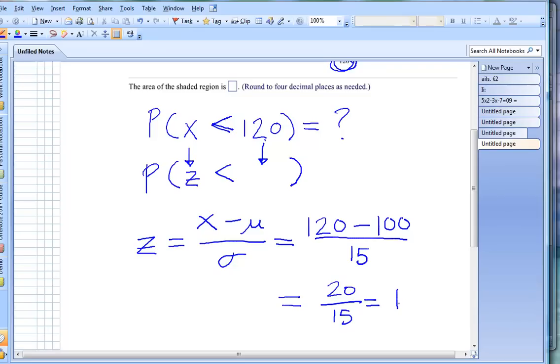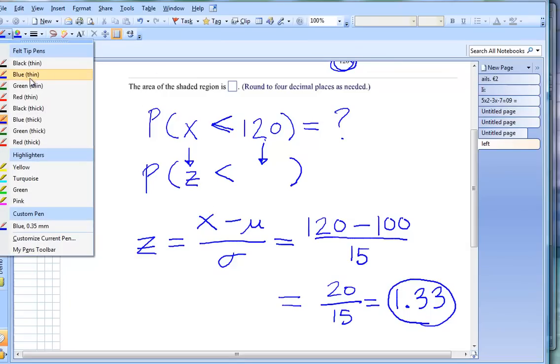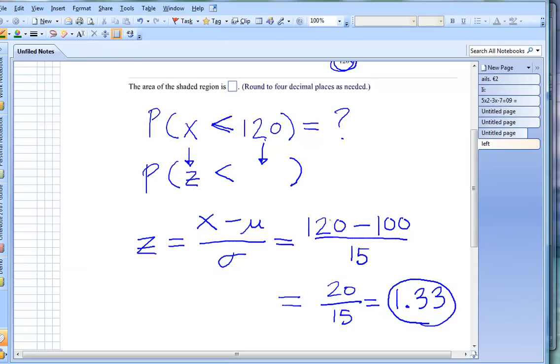Z numbers are usually rounded off to two decimal places here. So I'm just going to write it as 1.33. This is now the new z number that our x is going to be represented with. In other words, let's switch to a different color here. In other words, this x value here of 120 is now going to be represented as a z number of 1.33.